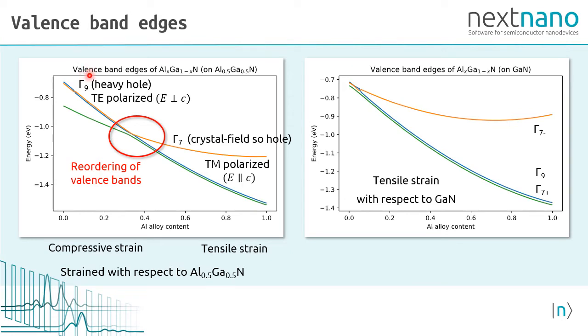In this figure, we show the three valence band edges of aluminum gallium nitride as a function of aluminum alloy content on aluminum gallium nitride substrate having 50% aluminum. This means in this area we have compressive strain. Here we have tensile strain. Both the strain and the alloy content is responsible for the order of the bands.